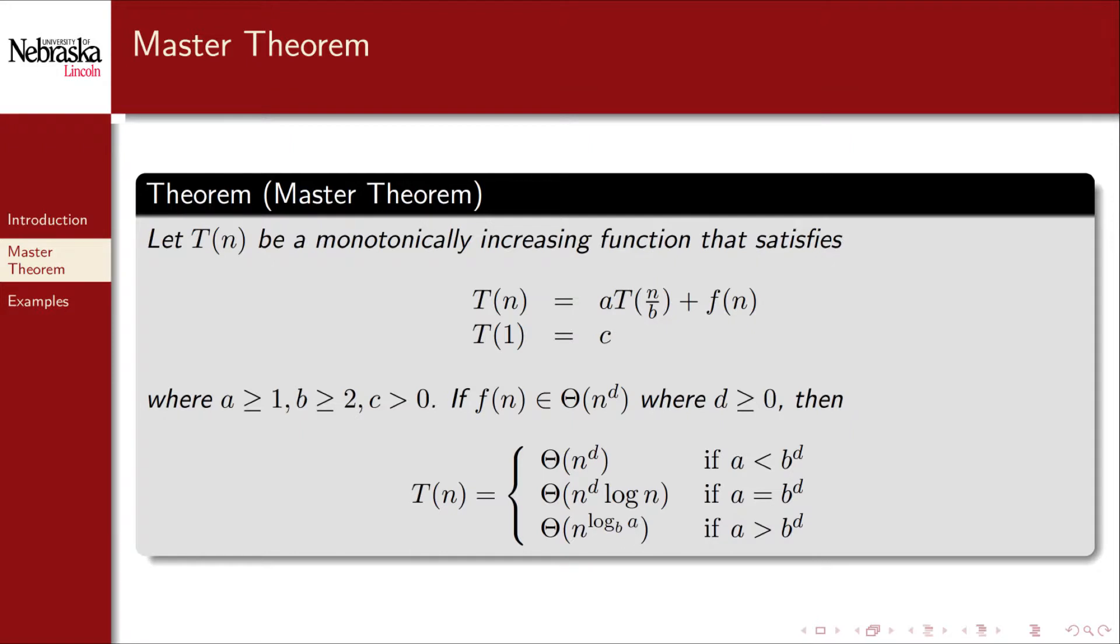Here's the formal statement of the master theorem. If we have a recurrence relation T sub n that satisfies the following form, that is T sub n is equal to a times T sub n divided by b plus some function f of n, then we can apply the following theorem.